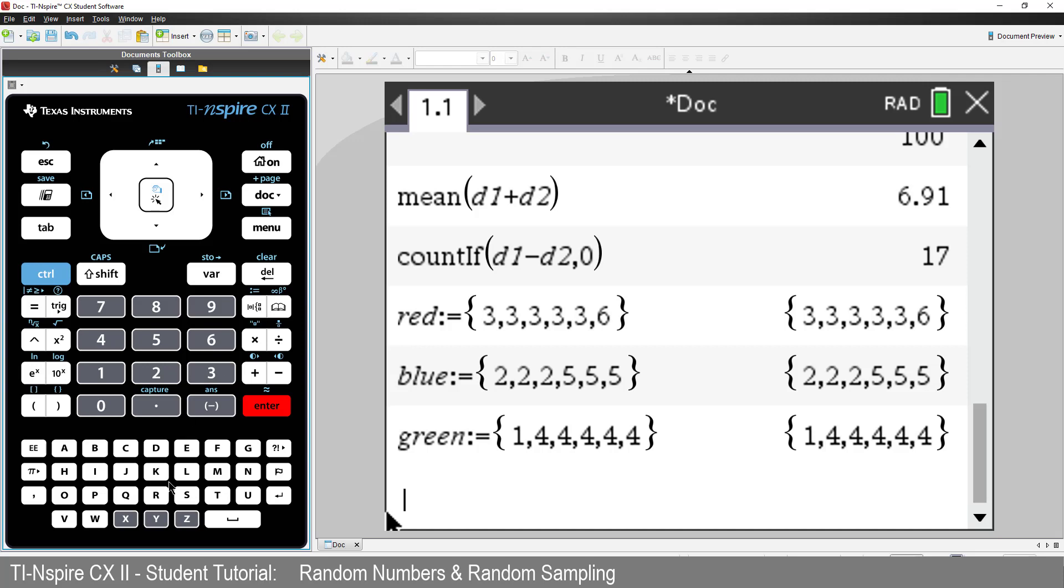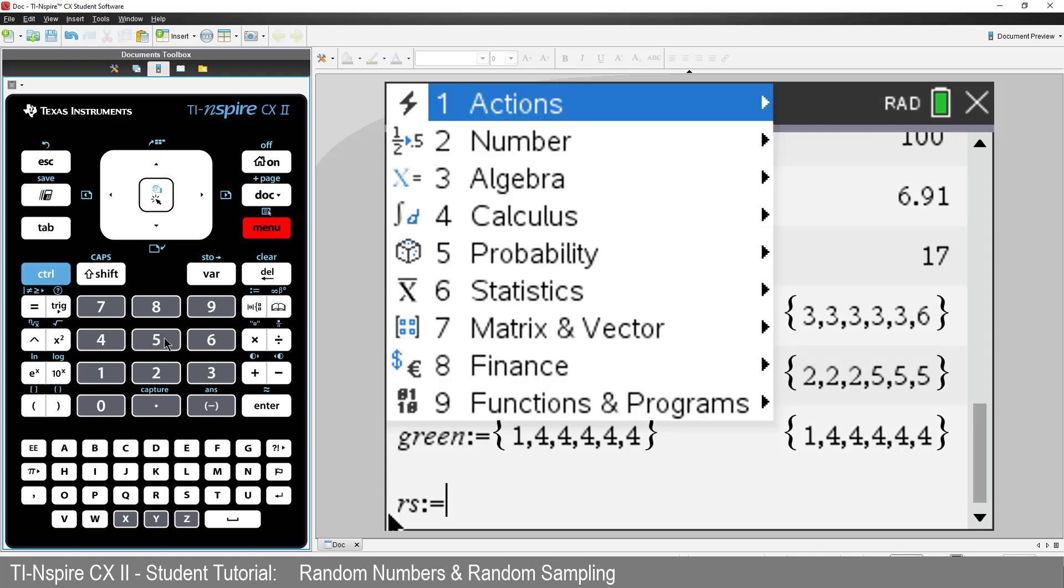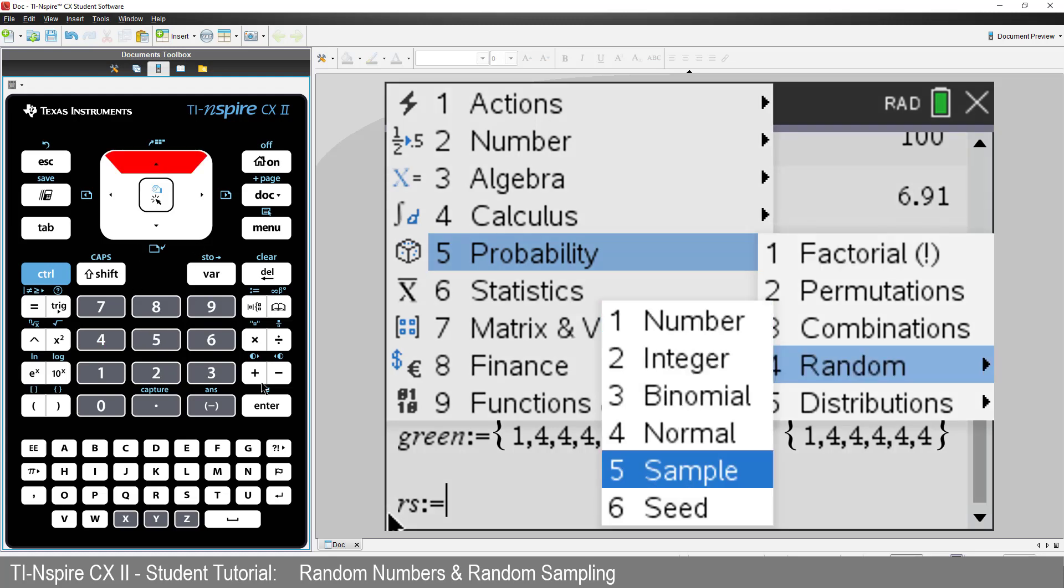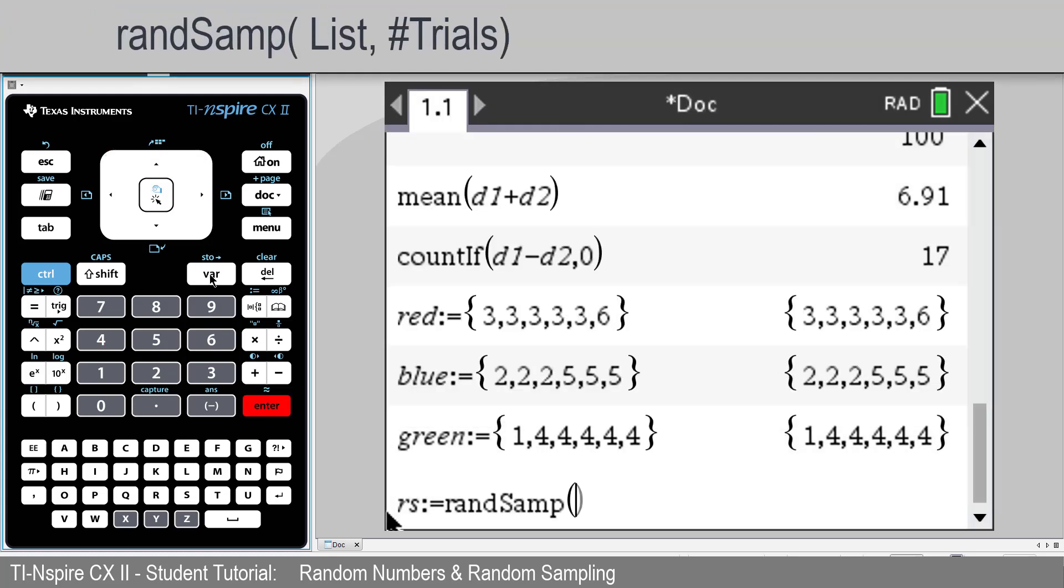In the first game, we'll try red versus blue. I'll store the results for the red sample as rs, for red sample. So my sample command has the syntax list, comma, and then how many samples we want to draw.